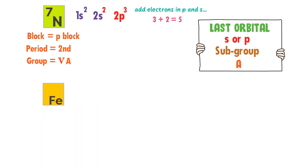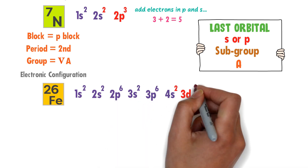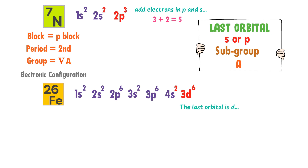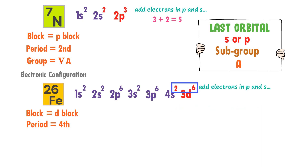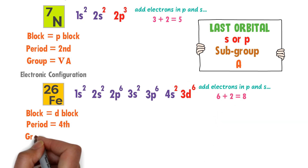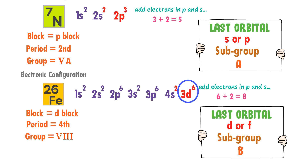Secondly, consider iron — its atomic number is 26. The electronic configuration of iron is 1s2, 2s2, 2p6, 3s2, 3p6, 4s2 and 3d6. The last electron of iron is in the D orbital, so iron is a D block element. The highest principal quantum number of iron is 4, not 3, so iron is present in the fourth period. To find the group number of iron, we add the number of electrons in the D and S orbitals: 6 plus 2 is equal to 8, so iron is present in the eighth group. Note that when the last orbital is D or F, its subgroup will always be B, so the subgroup of iron is B.